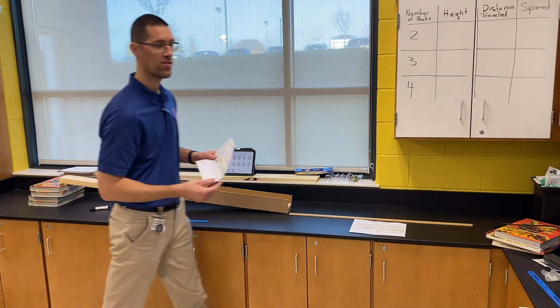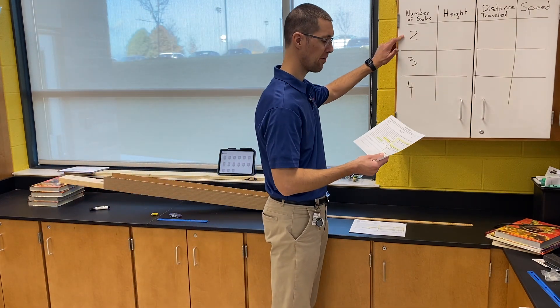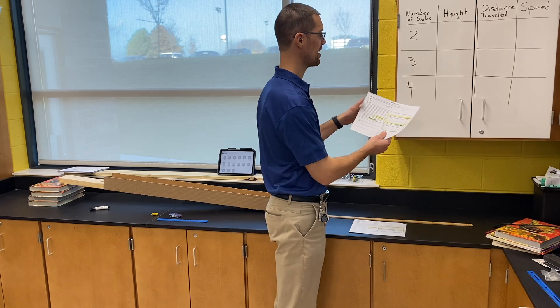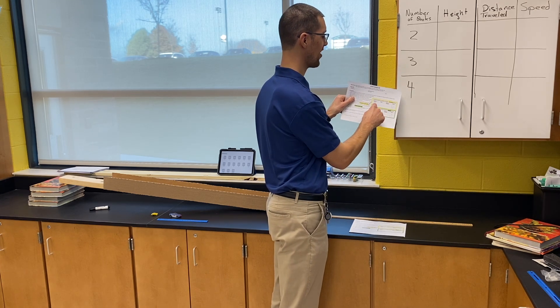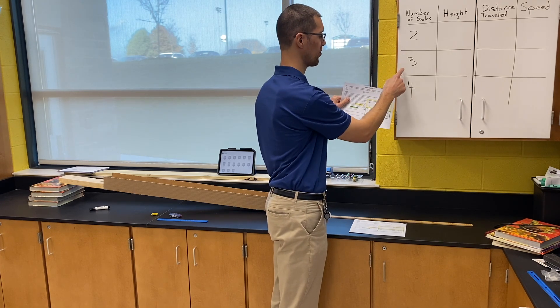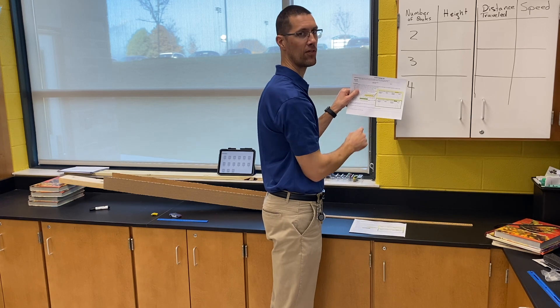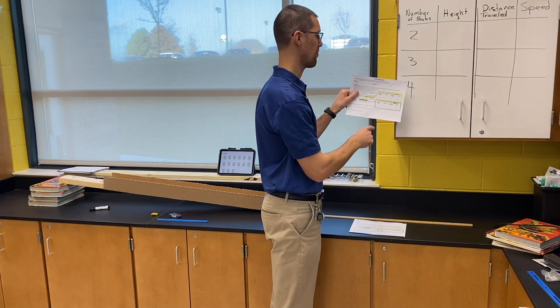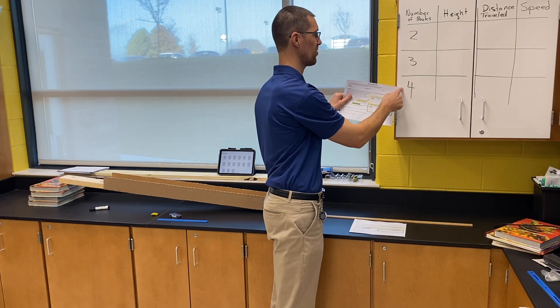And one other thing: if you haven't already done it, for the number of books, I know on your sheet it might say one, two, and three. Change it so the number of books are two, three, and four, both for the yellow box and for the green box down below.